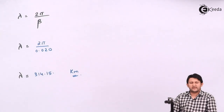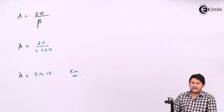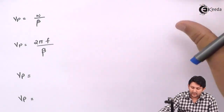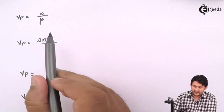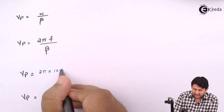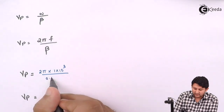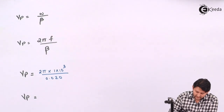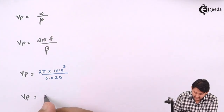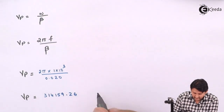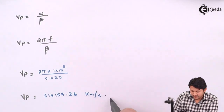If the question also asks for phase velocity vp, the formula is vp = ω/β. Substituting ω = 2πf = 2π × 1×10³ and β = 0.020: vp = (2π × 10³) ÷ 0.020 = 314,159.26 kilometers per second.